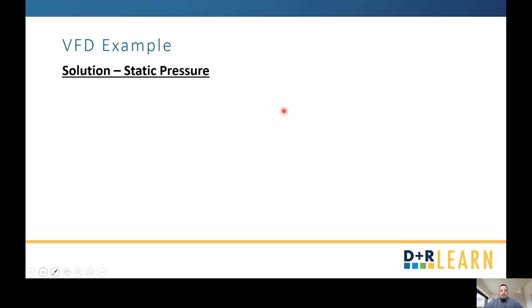Moving on to static pressure, we have the second affinity law here. Knowing these two variables are constant, we can get rid of those and end up with this. Solving for what our new static pressure is going to be, this is what we have. Because we don't know the Q values, we can stick with the frequencies. There's no reason to substitute. So we end up with one and a half inches of static pressure times 45 hertz divided by 60 hertz squared for a final value of 0.84 inches static pressure.